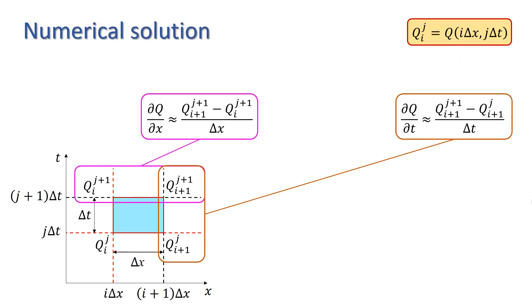If we now go back to the kinematic wave approximation we derived earlier, we can substitute our chosen approximations to the derivatives. However, we still have our Q to the β minus 1 term to deal with, so we need to make a choice about which value or values of Q to use to evaluate that.